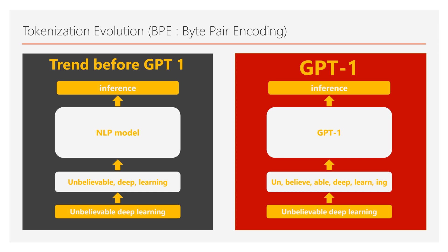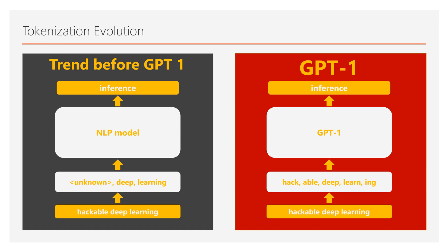Last but not least, GPT-1 uses more advanced tokenization than word tokens or character tokens alone — it uses byte-pair encoding, which compresses the most common pairs of characters. Byte-pair encoding has the advantage of both word embedding and character embedding. Word embedding's main benefit is similarity between words, but its disadvantage is the chance of generating an unknown vector for unseen words. Character embedding has less chance of unknown vectors for rare words, but less similarity between words. For example, 'hack' and 'able' are frequent words, so splitting 'hackable' into 'hack' and 'able' lets the model infer from both vectors, giving better performance than treating 'hackable' as an unknown vector.